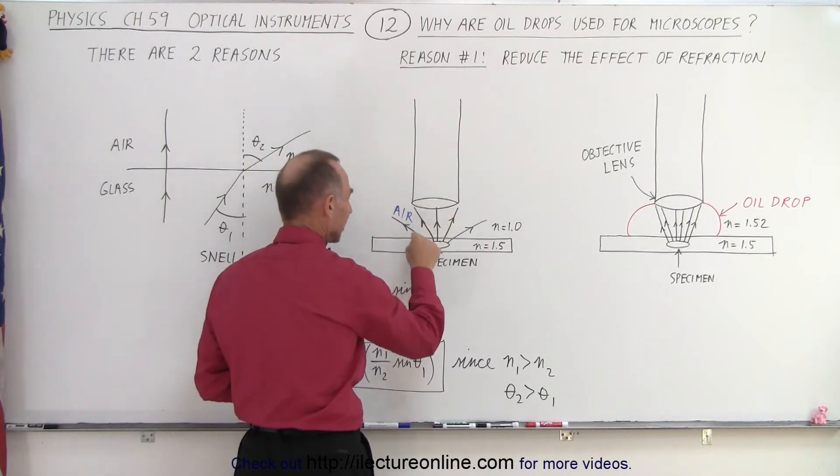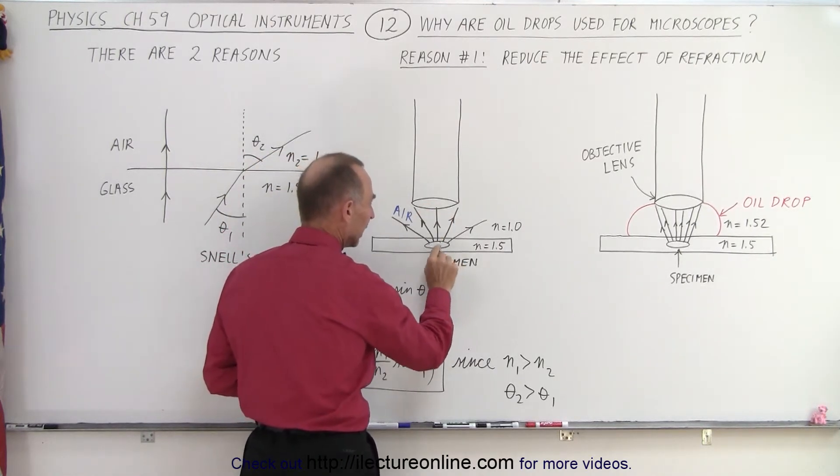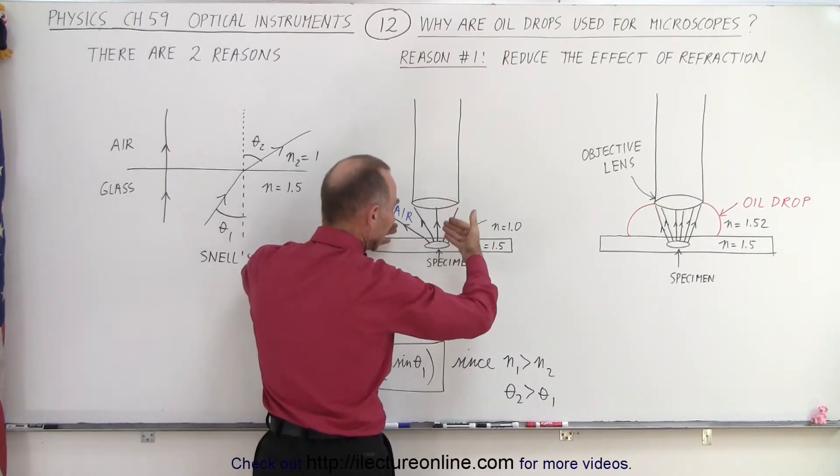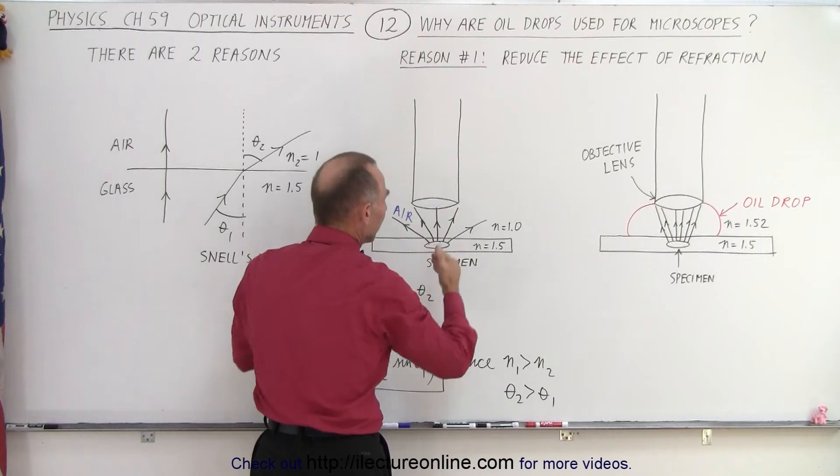Here we have the objective lens, we have the glass plate holding the specimen. And light, typically we try to shine light onto the specimen in order to illuminate it. The light then reflects off the specimen.